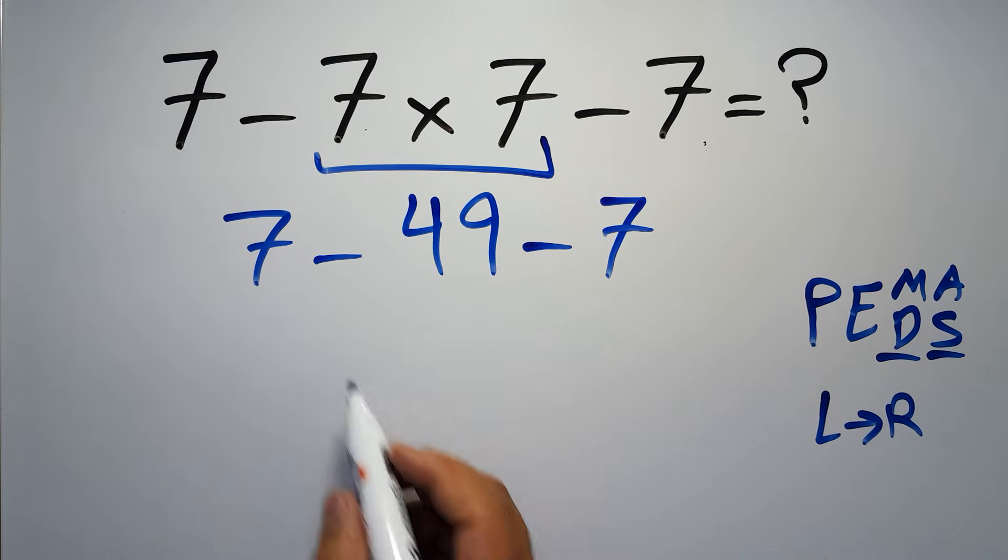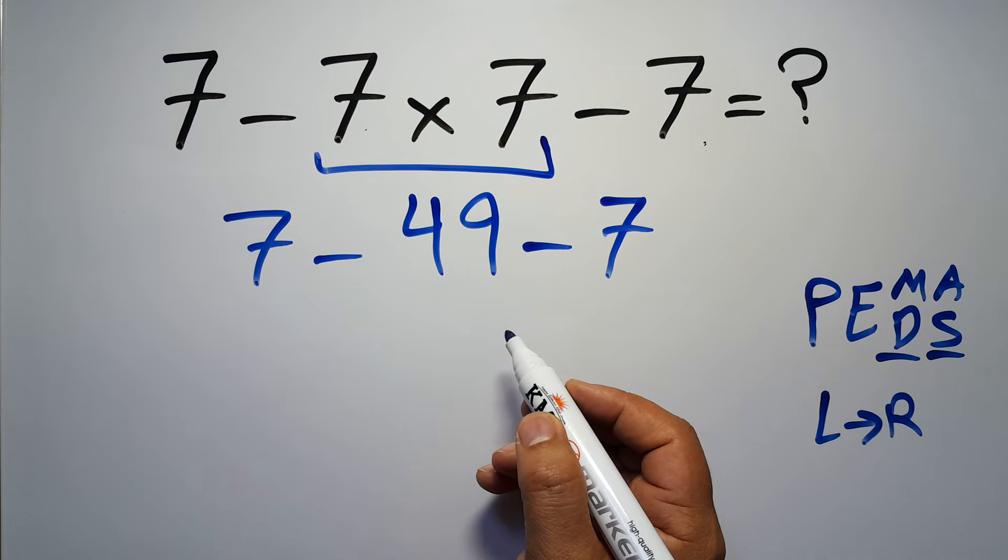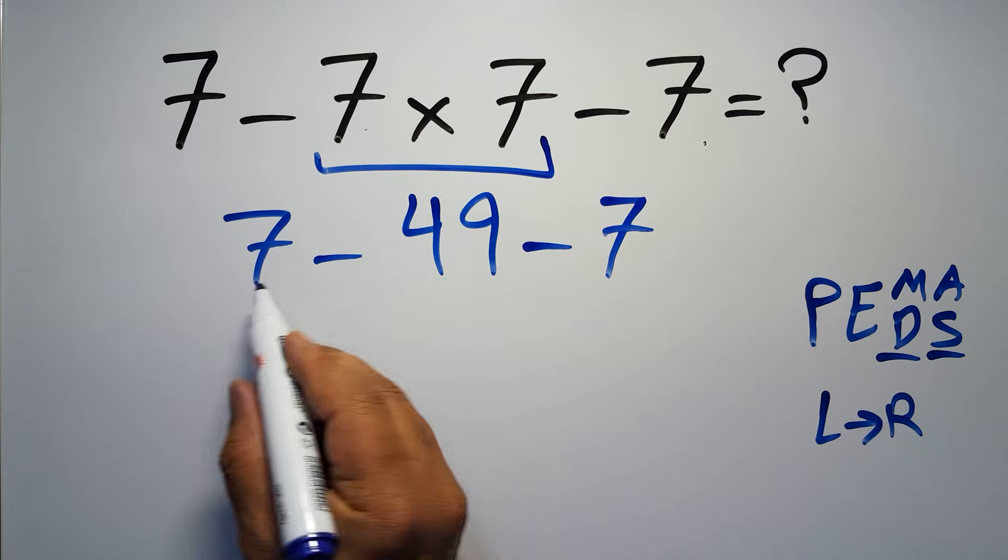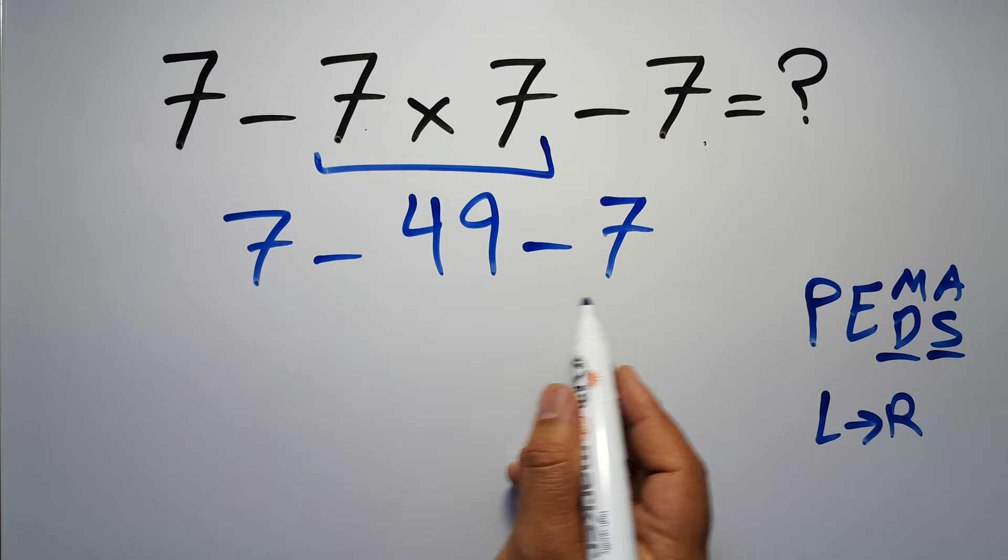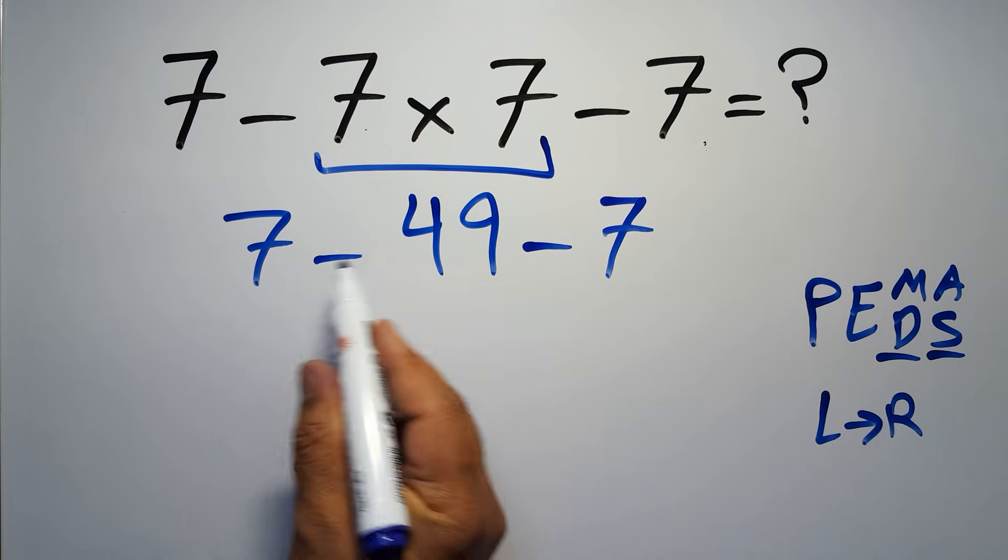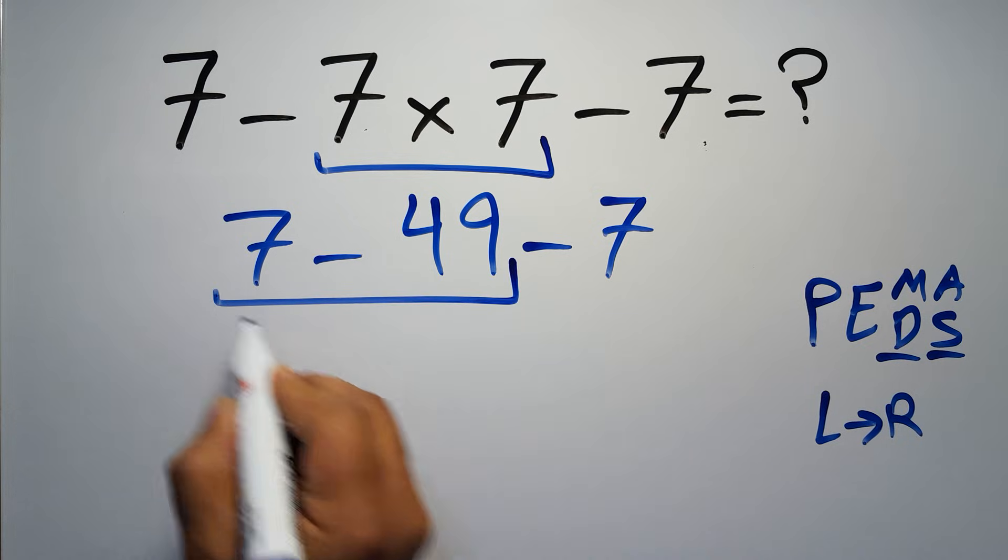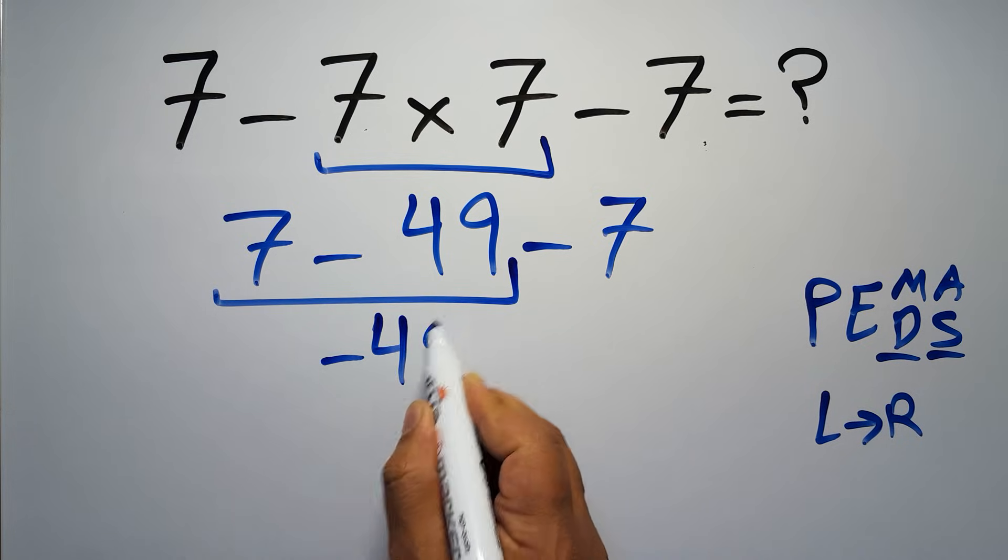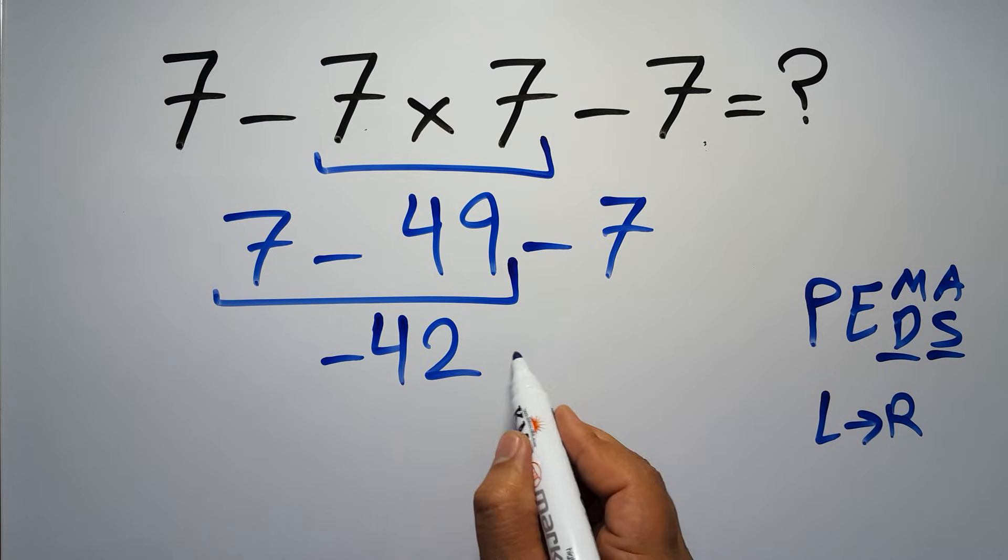Now we have two subtractions, and when we have more than one subtraction in an expression, we have to work from left to right. So first, this subtraction: 7 minus 49 gives us negative 42. So negative 42 minus 7 which equals negative 49.